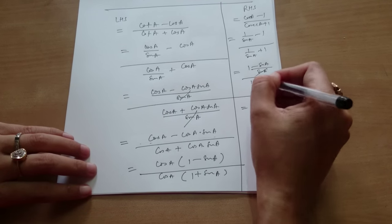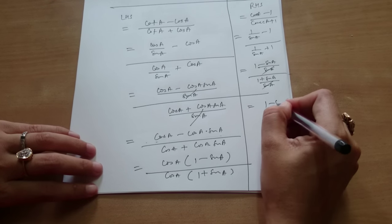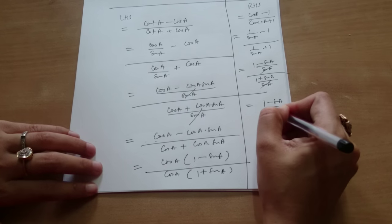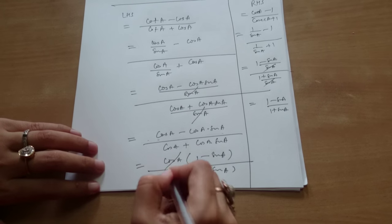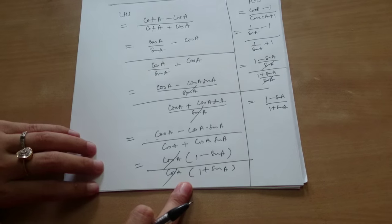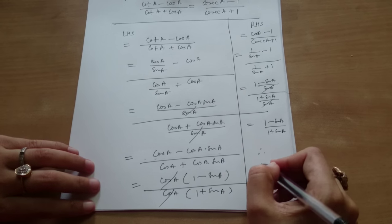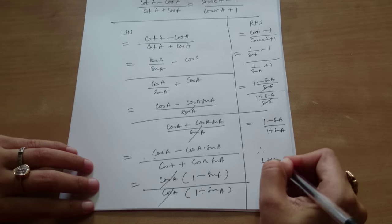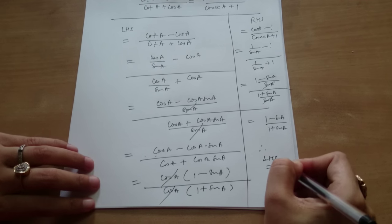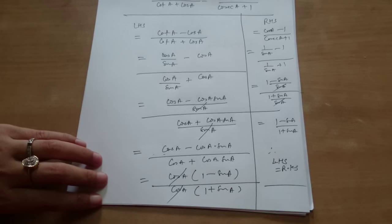This is equal to... Again you can cancel it. This is 1 minus sine A upon 1 plus sine A. Here also we get left hand side as this and right hand side is also this. Therefore on comparing this, LHS is equal to RHS. Good job.